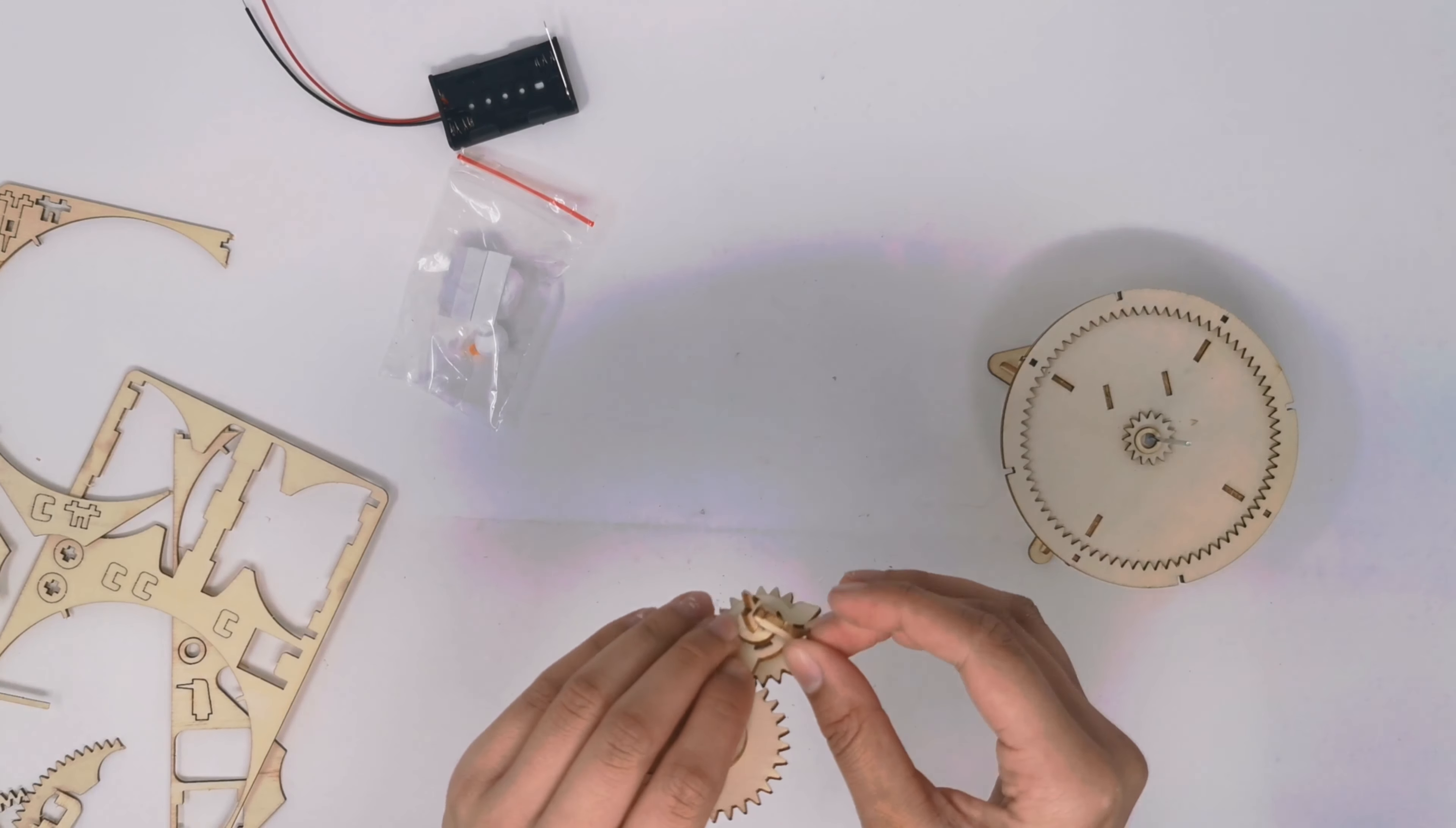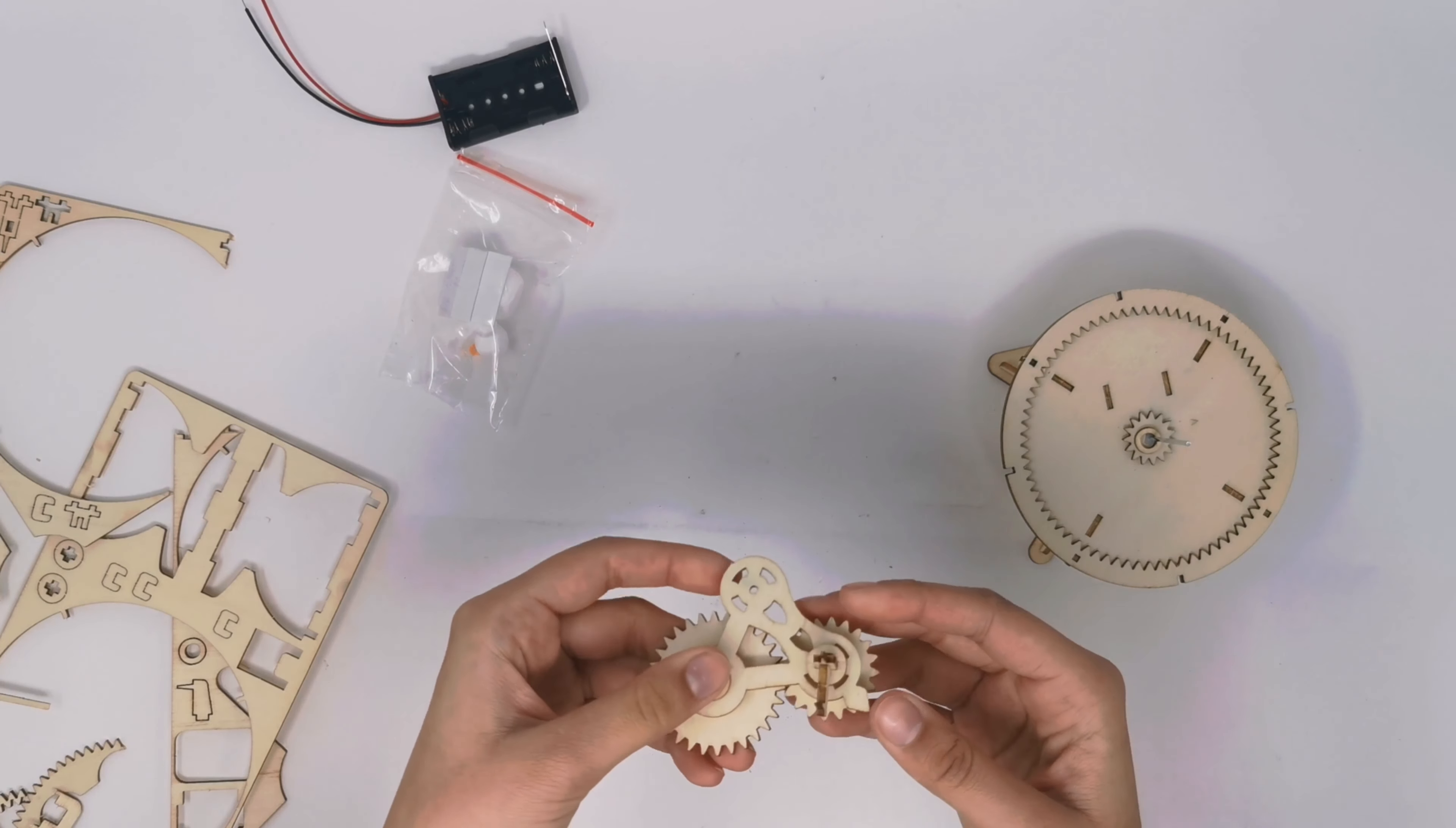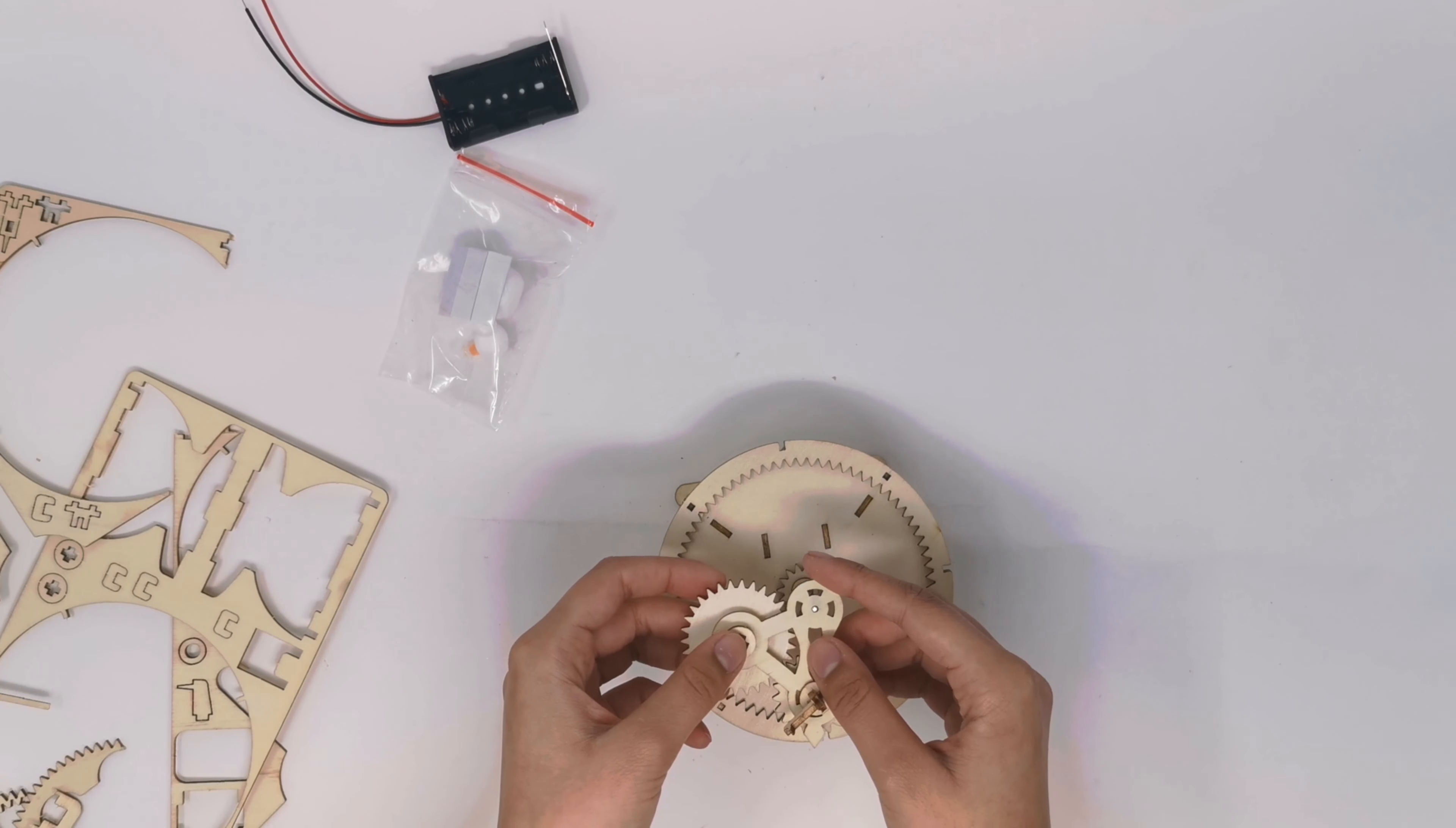Then, you will take this smaller piece and this is where the smallest planet will be fit, just like that. Next, take your component and thread it through the middle.